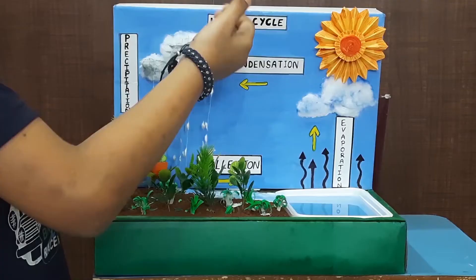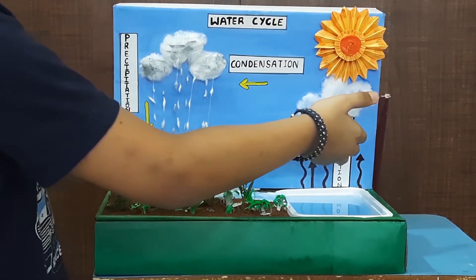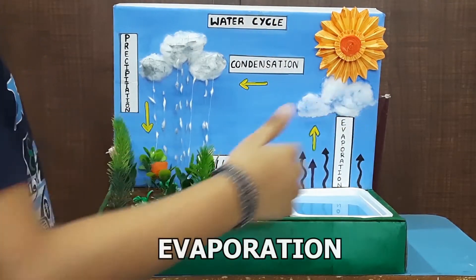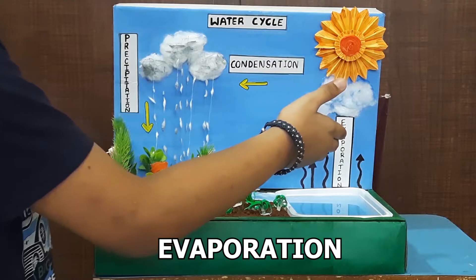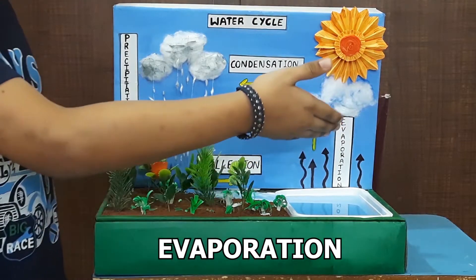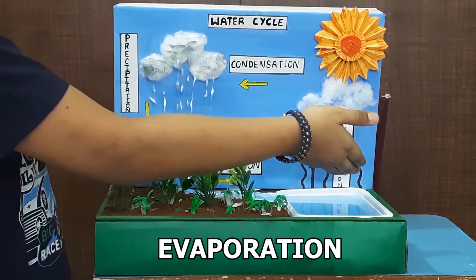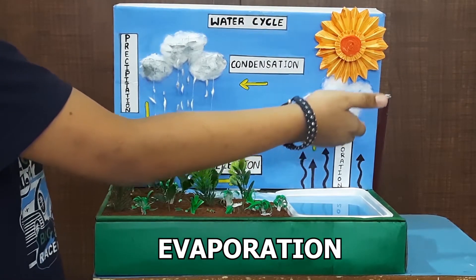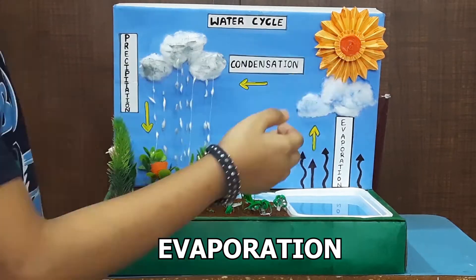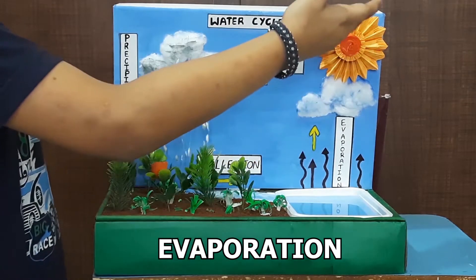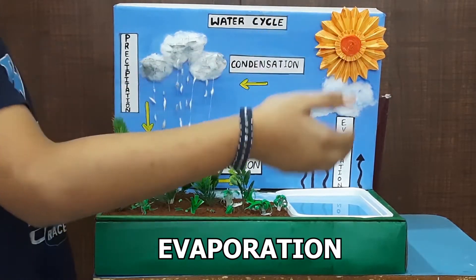The water cycle begins with evaporation of surface water on the earth. Evaporation is liquid changing into vapor. The sun heats up the water present in the water bodies and changes it into water vapor.